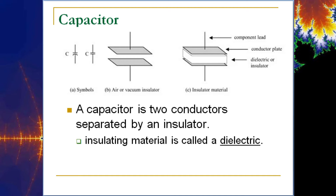Essentially, a capacitor is nothing more than two plates separated by some type of insulator — two conductors separated by an insulator. That insulator could be air, or it could be some other dielectric such as ceramic or mica. The insulating material is called the dielectric.